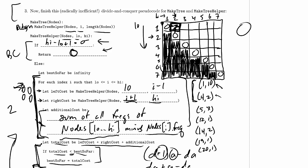Next we calculate the entry for low=2, high=3. We're looking at two nodes again, with a choice between node 4 and node 5 as the root. Regardless of which way we split, the left cost and right cost will both be zero. The additional cost is just the frequency of the non-root node, so the cheapest option is to make node 4 the root, giving us a cost of 2 for this entry as well.